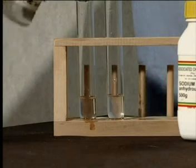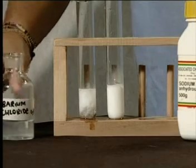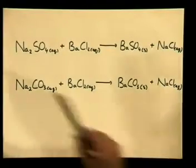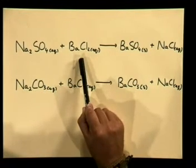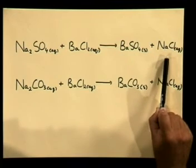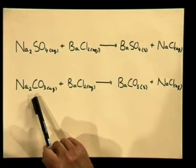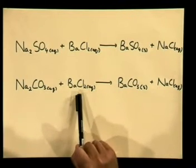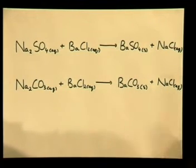Now, we need to write balanced chemical equations for the reactions we have observed. You should remember that when we initially added barium chloride to our sulfate and carbonate solutions, a white precipitate formed. In the test tube containing sodium sulfate, we have: sodium sulfate plus barium chloride gives us our precipitate barium sulfate and sodium chloride. And in the test tube containing sodium carbonate, we have: sodium carbonate plus barium chloride gives us our precipitate barium carbonate and sodium chloride. These are both examples of simple ion exchange reactions.